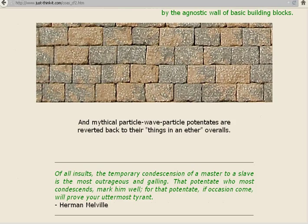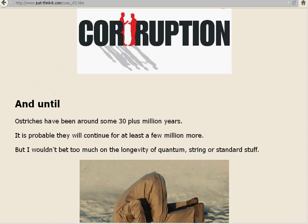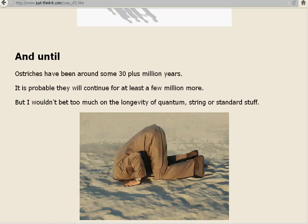Unless, unless you have fallen in love with your pet theory. Unless ego is what drives you. Unless you're in it for the money. And until, ostriches have been around some 30 plus million years. It is probable they will continue for at least a few million more. But I wouldn't bet too much on the longevity of quantum, string, or standard stuff.